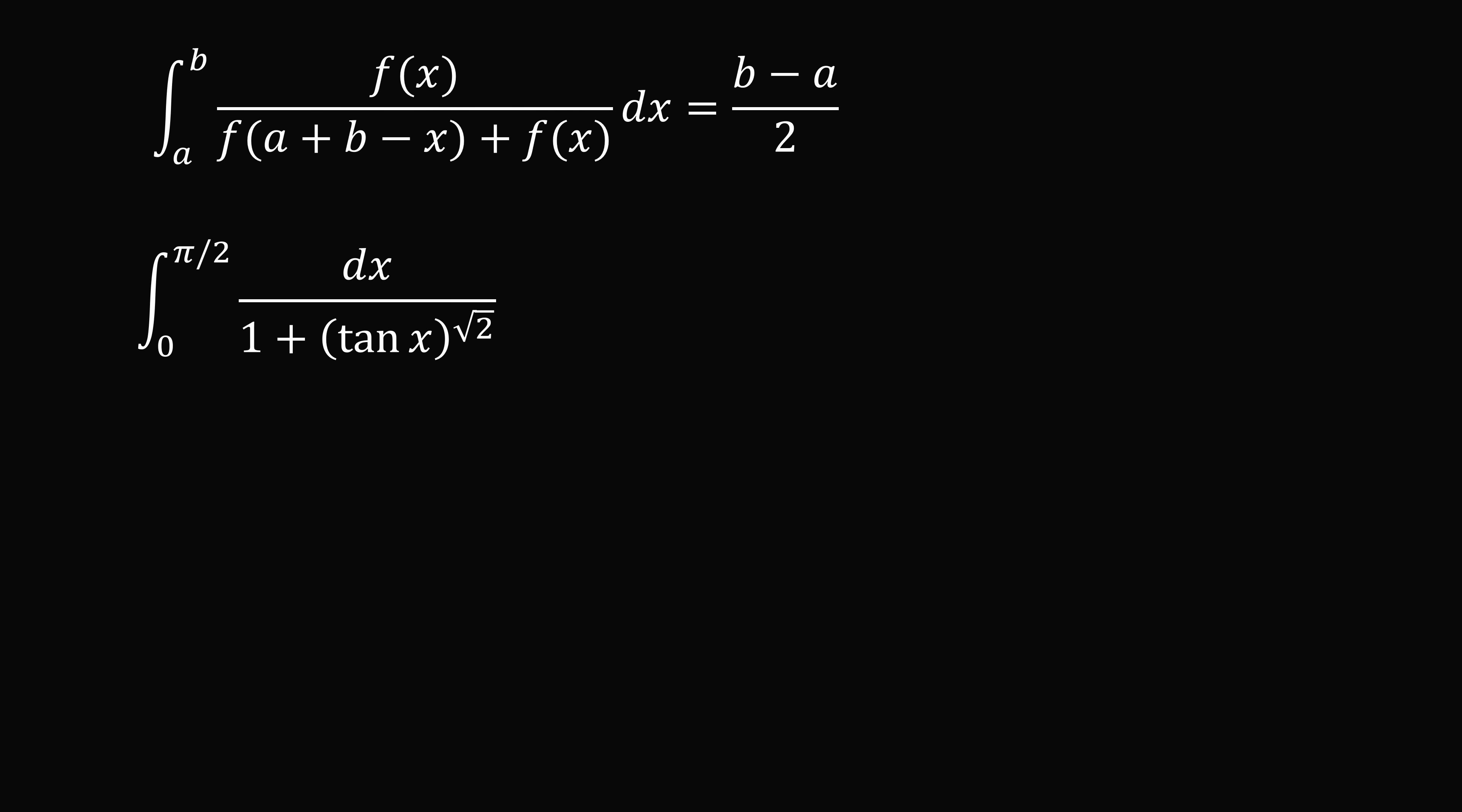So tangent of x is equal to sine of x divided by cosine x. So we can substitute in: this integral goes from 0 to pi over 2 of dx divided by 1 plus sine x raised to the power of root 2 divided by cosine x raised to the power of root 2. We can multiply the numerator and denominator by cosine x raised to the power of root 2.